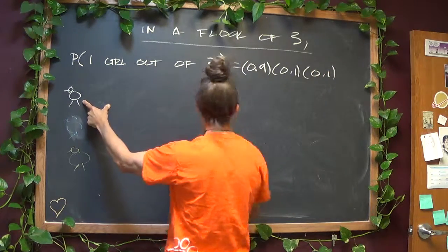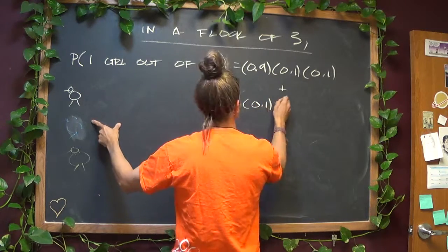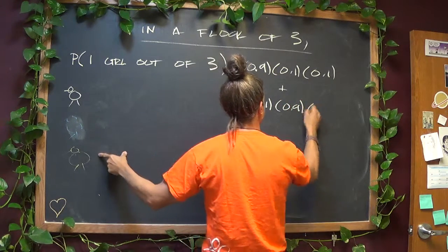'and' means multiply, or he's a boy, she's a girl, and he's a boy.